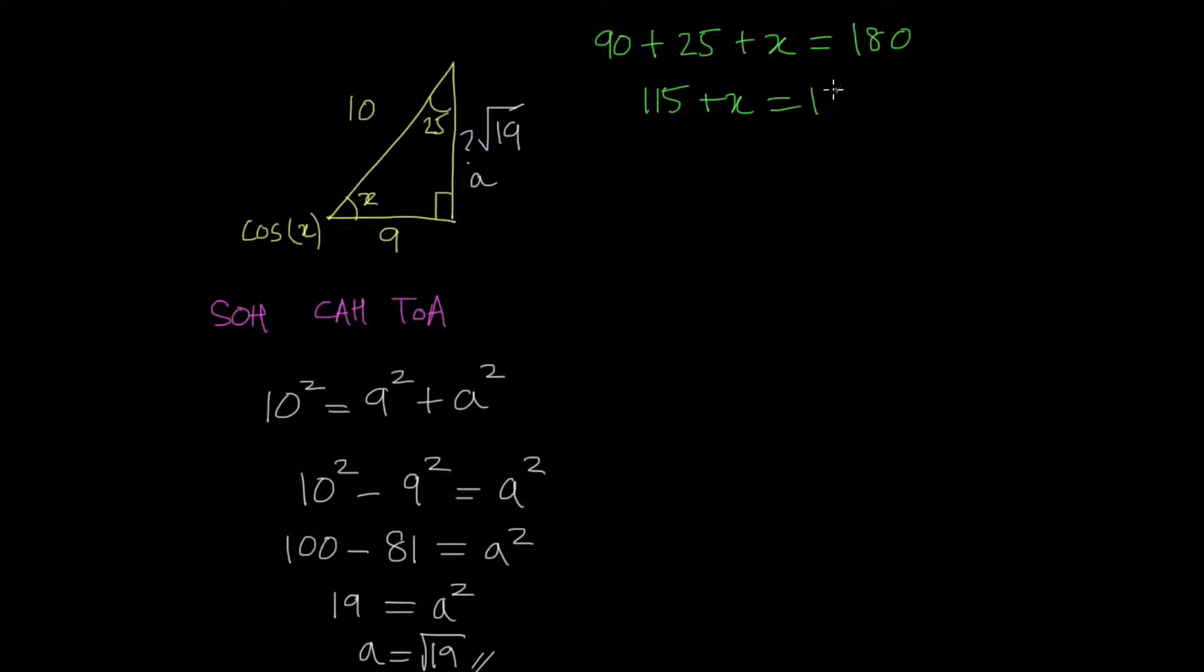So x equals, subtracting 115 from both sides, x equals 180 minus 115. So x would be, let's see, that's 65 degrees.